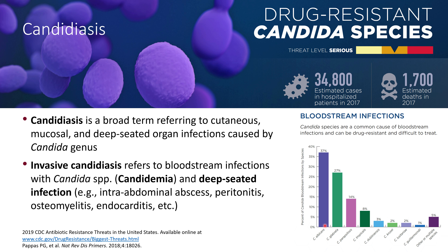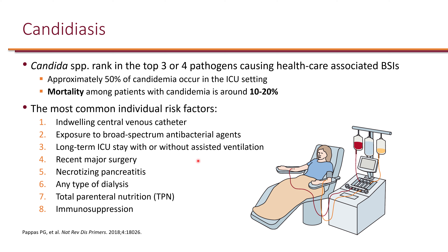So in the blood for candidemia, C. albicans causes the most incidents, followed by C. glabrata, and then C. parapsilosis, tropicalis, and then the rest are pretty much low rate. Among healthcare-associated bloodstream infections, candida actually ranks in the top three or four. Staphylococcus aureus is number one, then coag-negative staph, and then between enterococcus and candida would be the next that cause bloodstream infections.